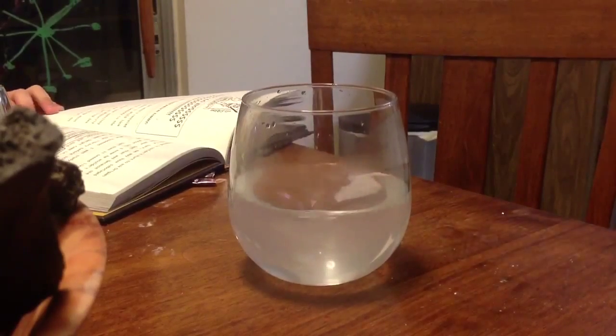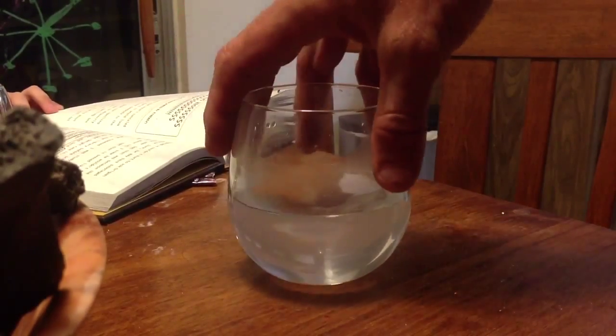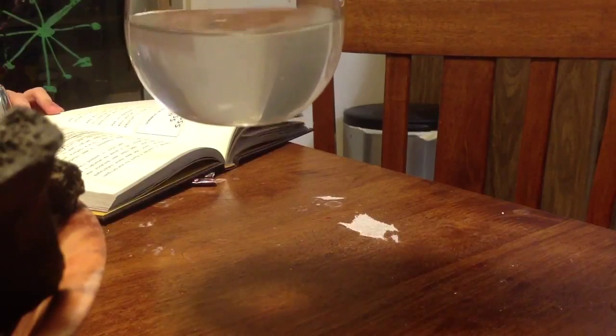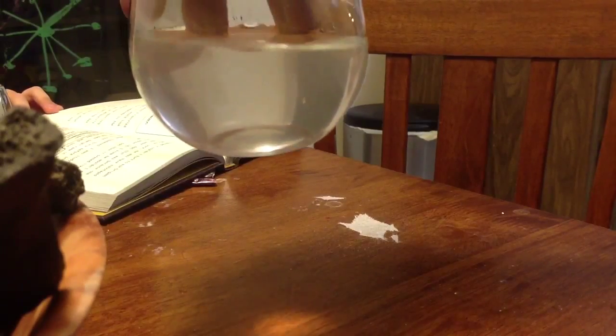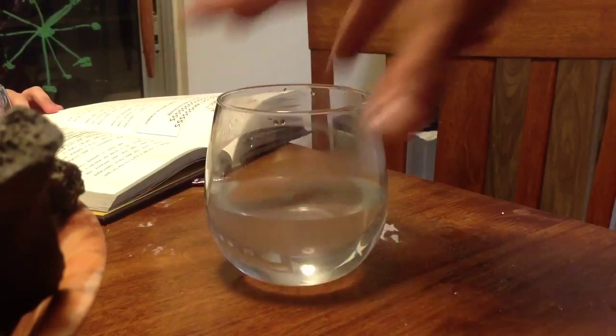Now, after the mixing, you can no longer see the actual granules of salt. They are invisible—they have disassociated and are hidden within the polarity of the water molecules themselves.